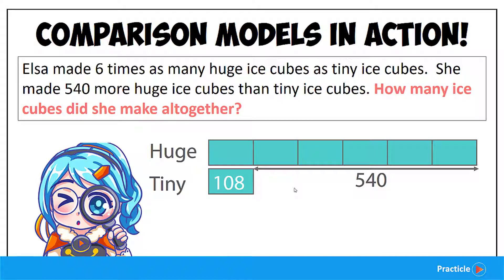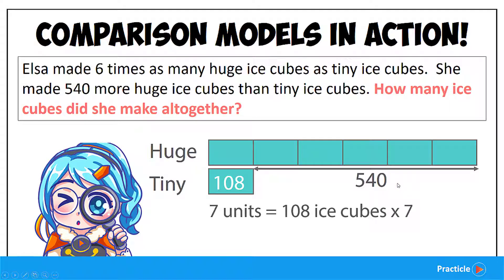How many units represent all the ice cubes? 1, 2, 3, 4, 5, 6, 7. So to find the value of the 7 units, let's take the value of one unit — which is 108 — and multiply it by the total number of units, which is 7.